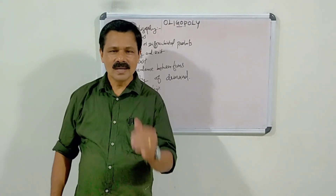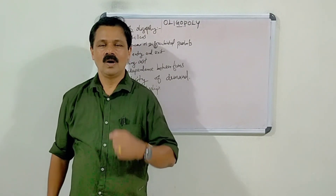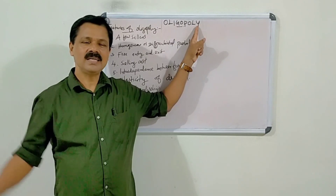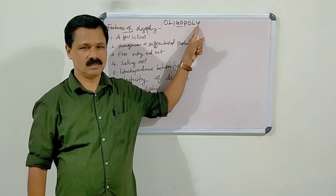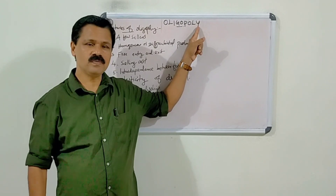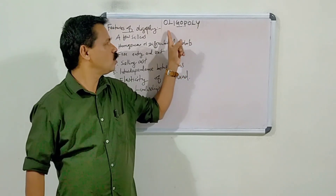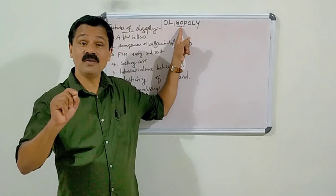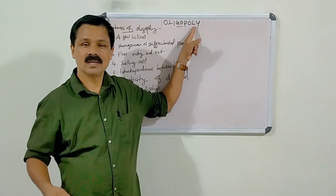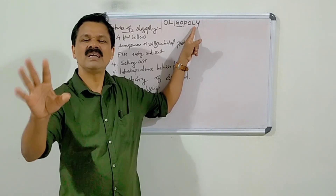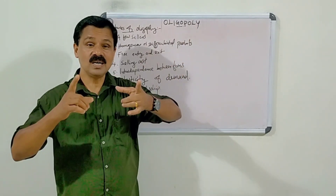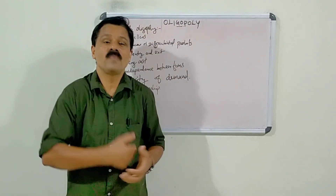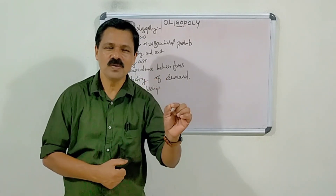Welcome back. In this video, we will discuss the concept of oligopoly. The term oligopoly is made up of two Greek words: oligo and poly. Oligo means few, and poly refers to sellers. Therefore, the term oligopoly is used to designate control of a market by a few sellers.